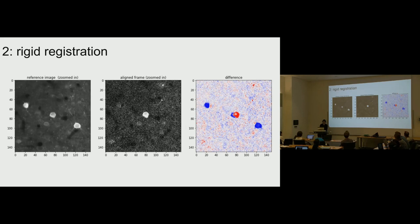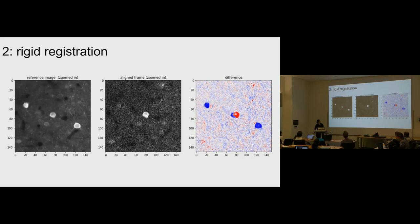For rigid registration, we now have a reference image. Here's an example of a single frame, and here's the difference between the frame and the reference image. In the difference image, red is a positive difference and blue is a negative difference. You can see this frame is shifted from the reference image. Does anyone have an idea how you might compute the shift to correct back to the reference image?